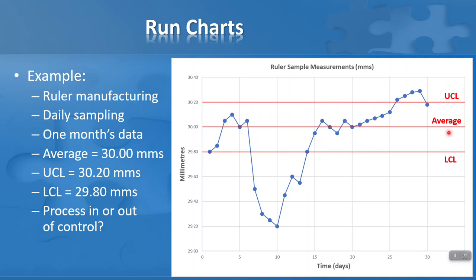These might be school rulers not used for precise engineering. We want them to be as close as possible to 30 millimeters. We know, because of random variation, some rulers will be longer than 30 millimeters and some will be less. In this case, we've set our upper control limit at 30.2 millimeters - that's three standard deviations above the mean of 30 millimeters. Our lower control limit is 29.8 millimeters, so 0.2 above and 0.2 below represents three standard deviations away from the mean.